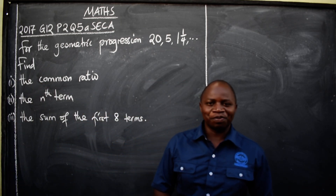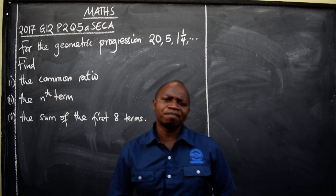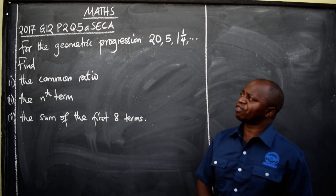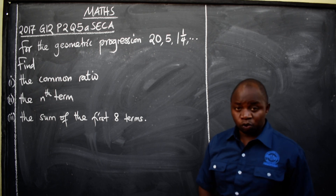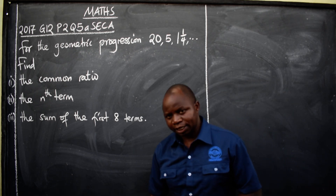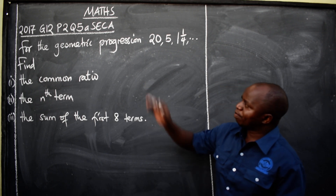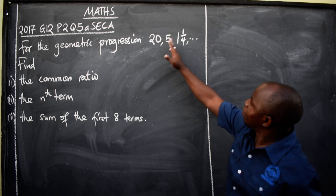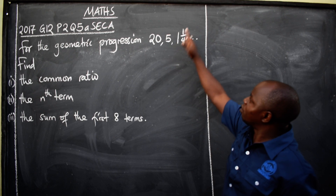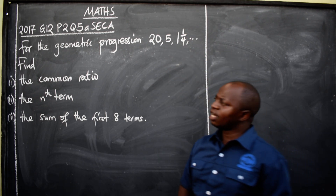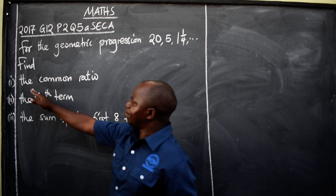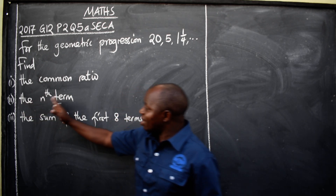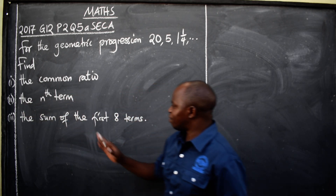Hello ladies and gentlemen, hope you are well. This is mathematics. In this video we want to look at this question — it is from 2017 Grade 12 Paper 2, Question 5A Section A. For the geometric progression 20, 5, 1, 1/4 — it goes on. Find: part one, the common ratio; two, the nth term; and three, the sum of the first eight terms.